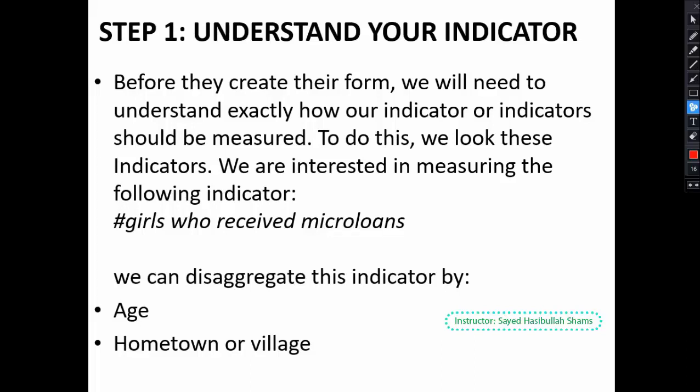Every indicator must have a definition. For example, our definition for this indicator is that the girls whose age is 18 to 20 and who can earn from five thousand to ten thousand dollars in one year are eligible for the microloan purpose. So now we understand that this indicator defines girls aged 18 to 20 who can receive from five thousand to ten thousand dollars per year. This is step one — we must understand this step because it is very important.